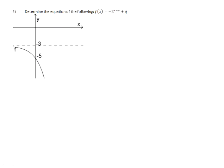Question 2. To determine the equation of the following, f(x) is equal to negative 2 to the power of x minus p plus q. We know that the q-value is the asymptote. And in this case, the asymptote is that y equals negative 3. So we can already substitute in the value of negative 3 in place of q.